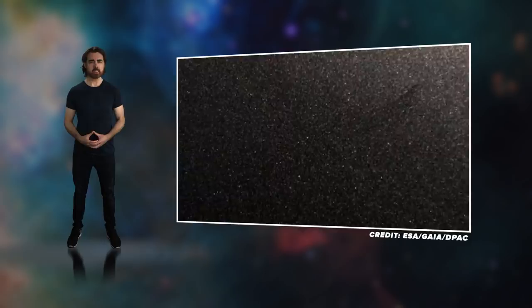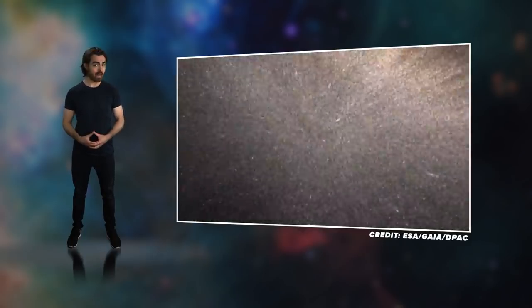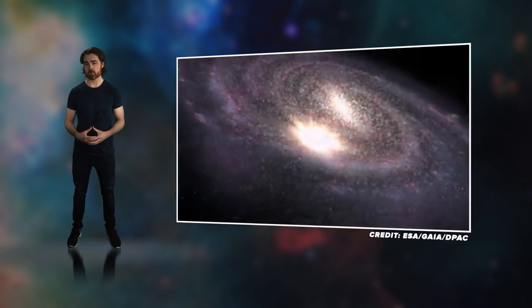The result is a 3D dynamical atlas of our quadrant of the galaxy, an atlas that we can wind both forwards and backwards in time. Let's start with distances. How does Gaia measure these?